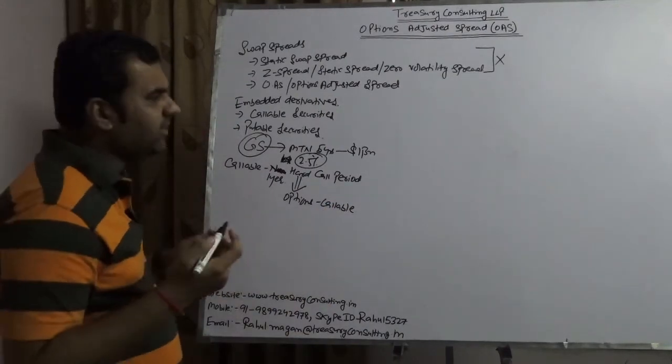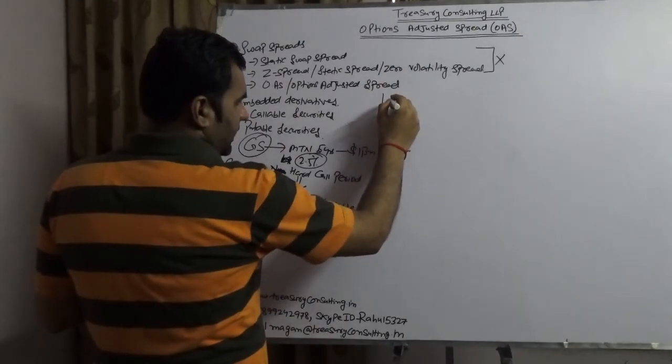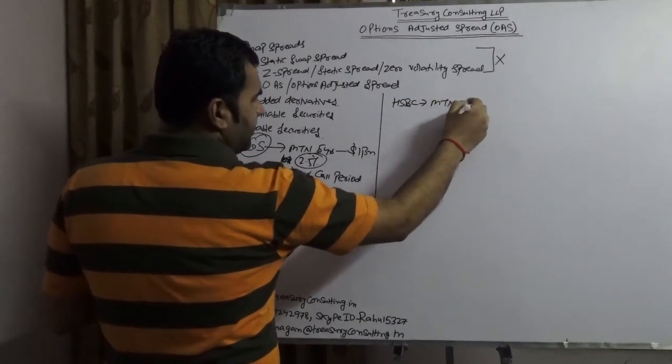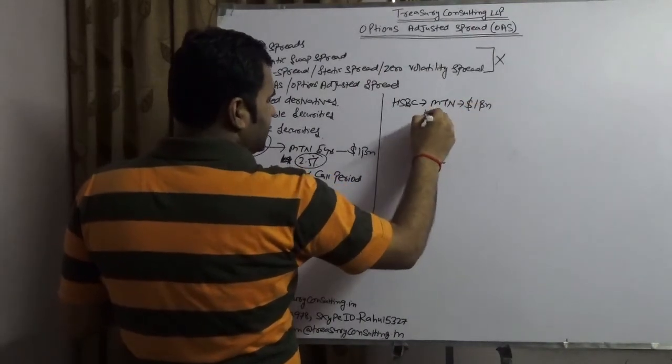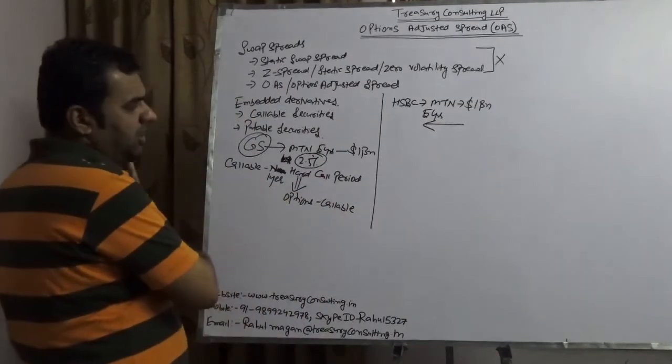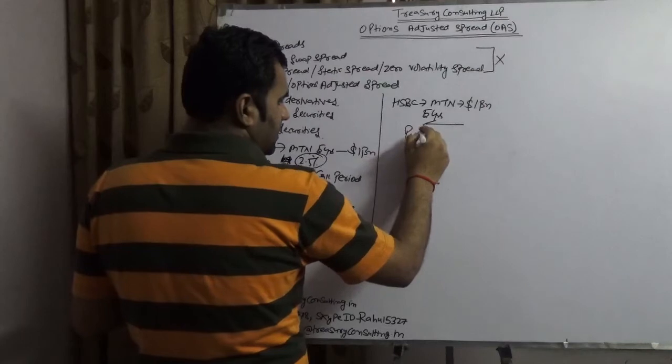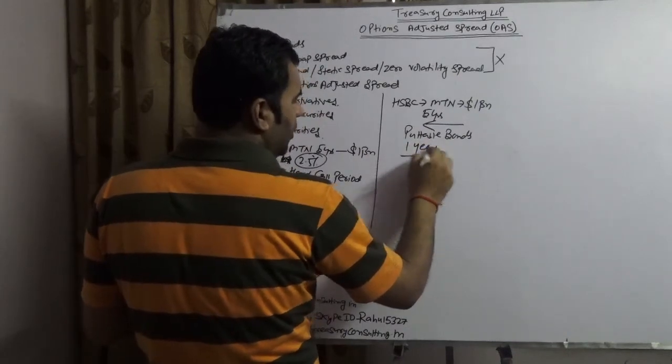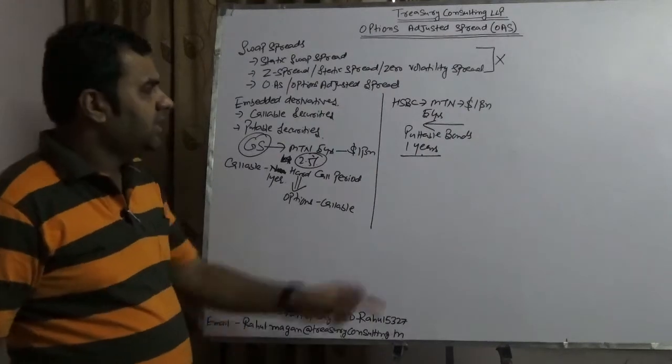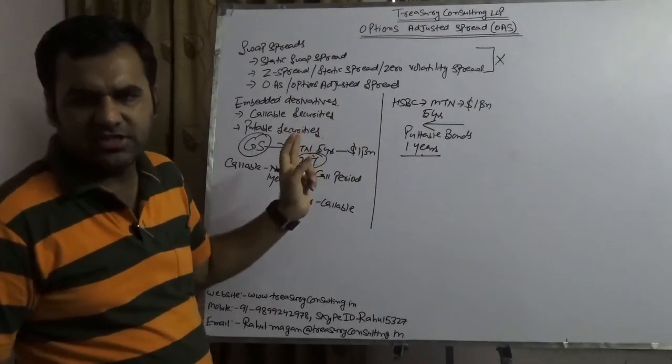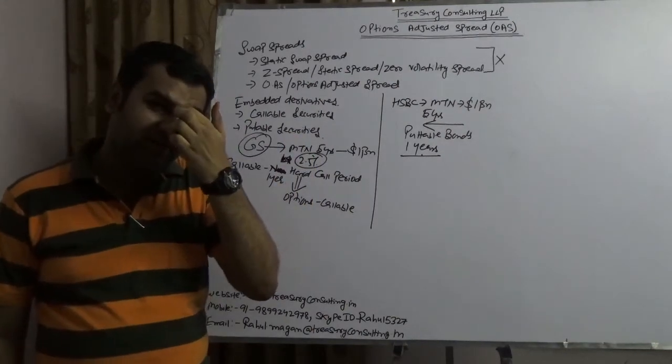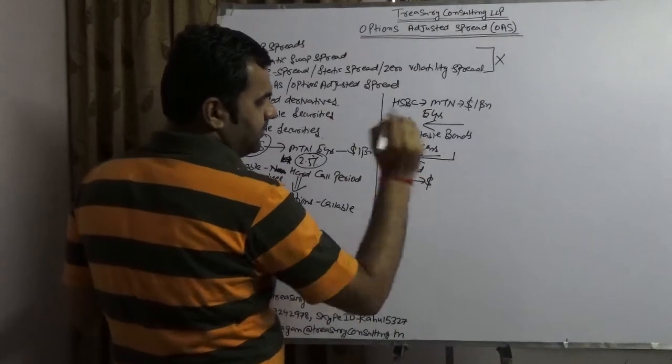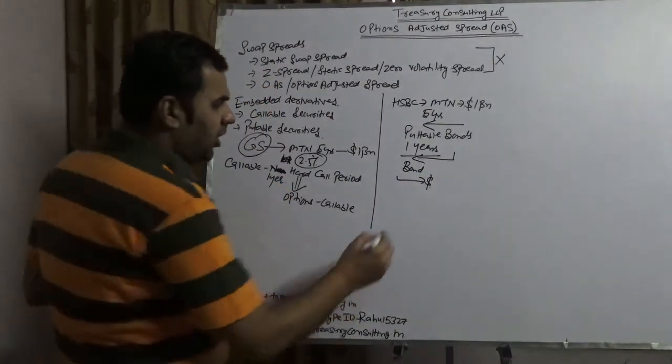Now here you have one kind of option which is callable. Take it another way: take a bank which is in a mess, HSBC. HSBC issued again MTN, suppose it is 1 billion, same 5 years, but this is putable. See the arrow: callable arrow was this direction, and putable arrow is this direction. The difference is that here the hard put period is 1 year, which means till 1 year, if the interest rate rises in the market, the investor cannot surrender. But if after 1 year interest rate rises, the same investor will surrender their bonds and they will get their money. Now that option is known as putable.